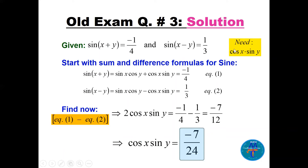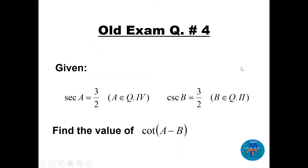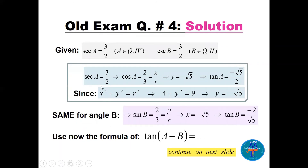Question number four: we have two angles a and b, with sec(a) = 3/2 and a in quadrant four, and csc(b) = 3/2 with b in quadrant two. We need to find the value of cot(a − b).